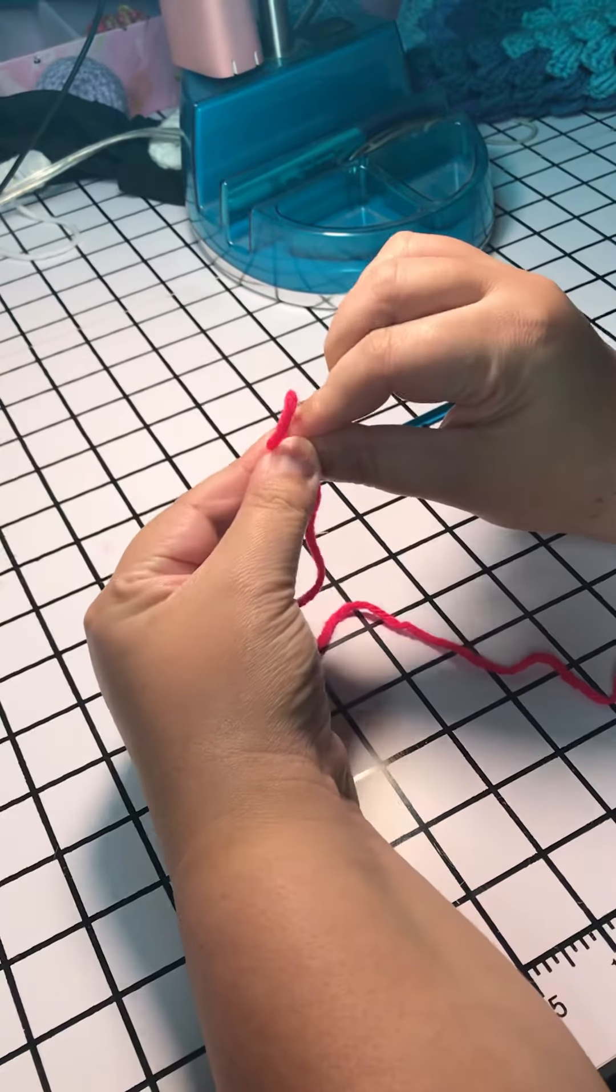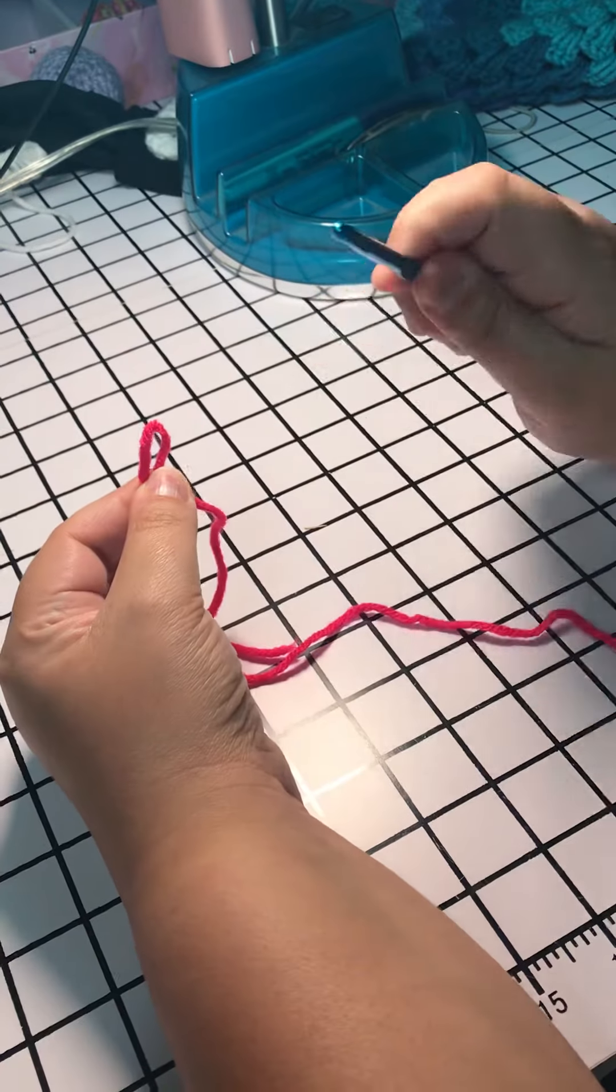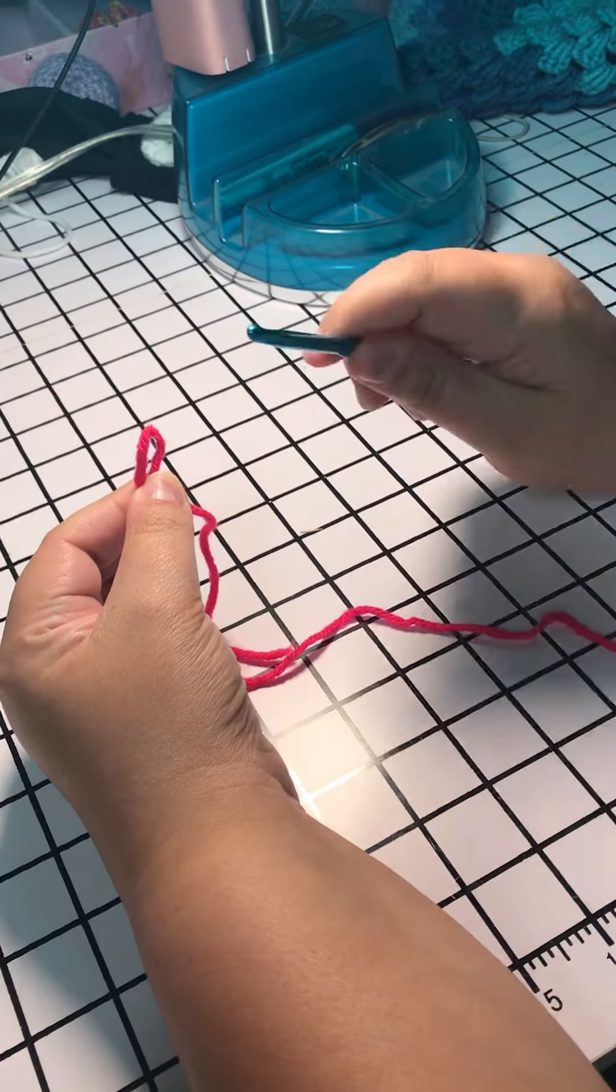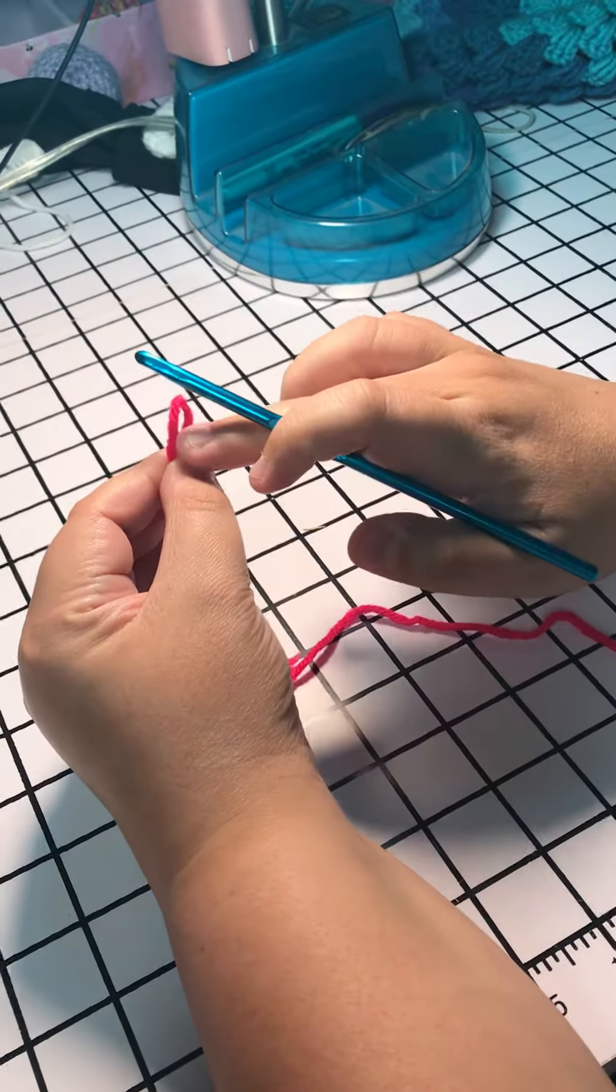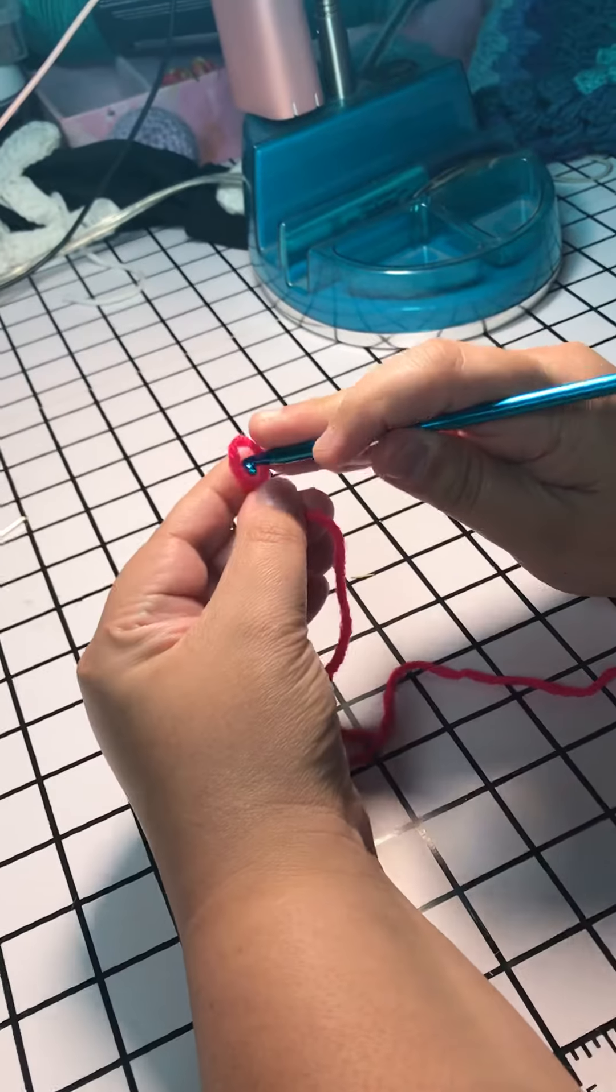Then I switch it to my left hand so that way I'm able to pick up my hook in my right hand. Now from the front of the loop that you made to the back, I insert my hook.